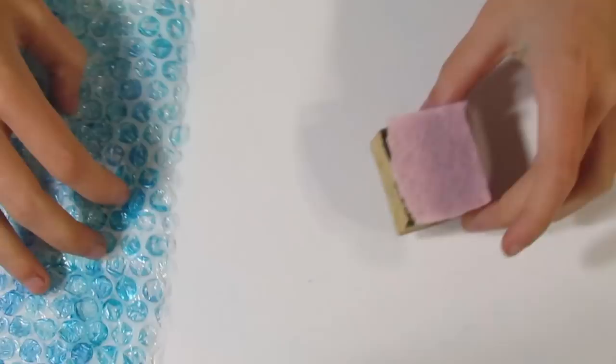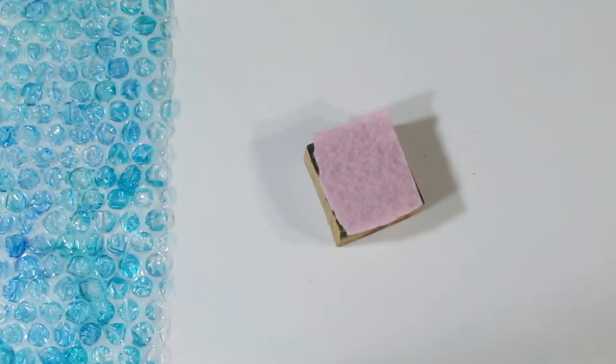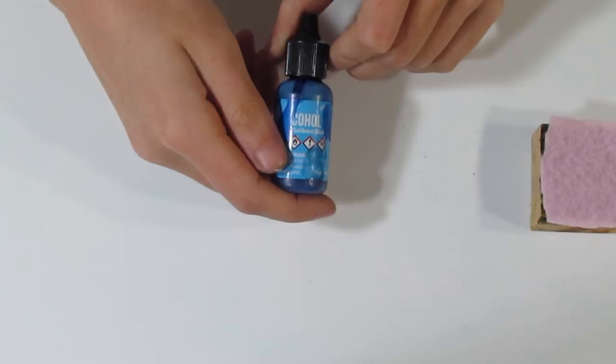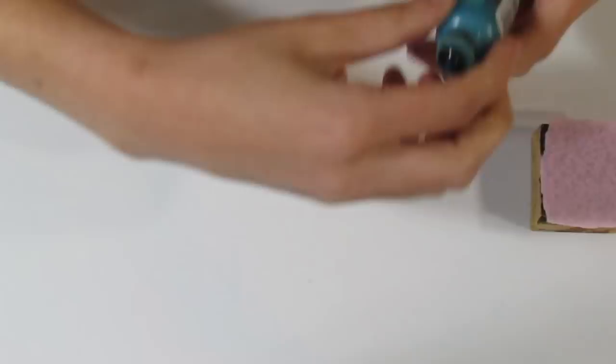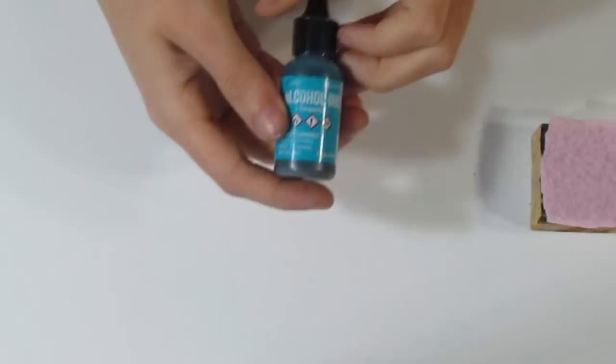And you're going to need alcohol inks. So I'm going to be using sailboat blue, and I'll open these as I go. Pool. Mermaid. And turquoise. And you can use any colors you want.